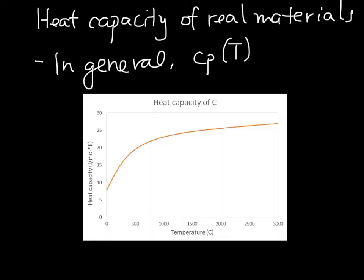This is a plot of heat capacity in units of joules per mole·kelvin as a function of temperature, for carbon. Clearly this is not a constant, although at higher temperatures it starts to become somewhat more constant.